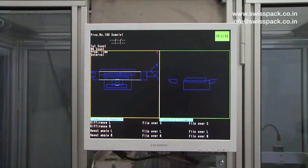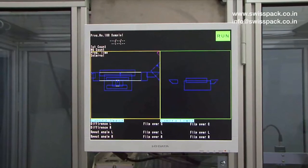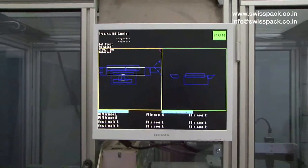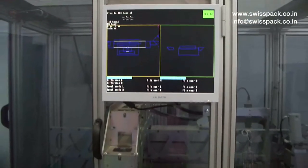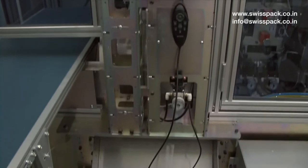We also have an online inspection system in the machine. We have two cameras, one on the top and the second on the bottom. The inspection system checks the position of the spout.